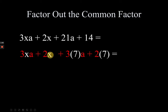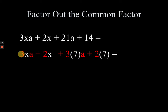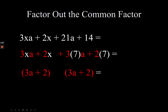The common factor in the first pair is x, so we take out x and 3a + 2 is left behind in parentheses. For the other pair, the common is 7 and the non-common are 3a + 2, which also remains in a parenthesis. The non-common terms are shown in red ink and stay in a parenthesis.